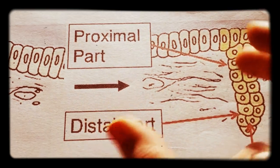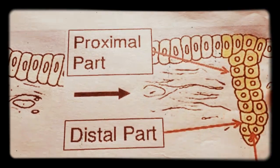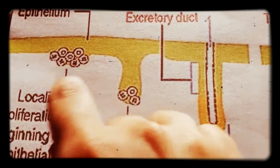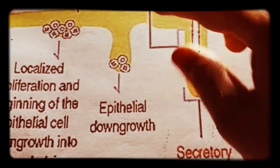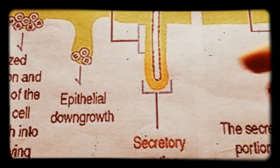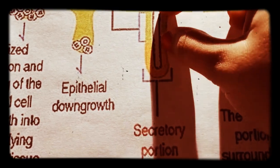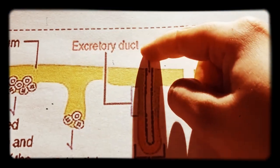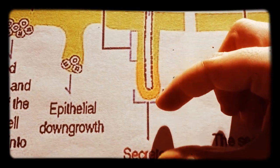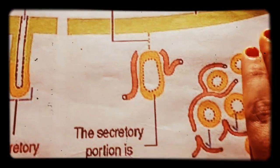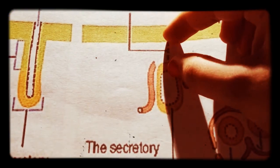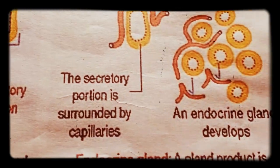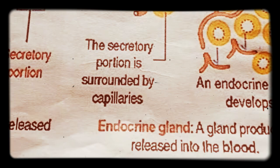In endocrine glands, what happens differently is that the proximal part disappears. In exocrine glands, epithelial cells show localized proliferation and a cord-like extension into connective tissue, eventually dividing into proximal and distal areas — the proximal becomes the duct open on the surface, and the distal becomes the secretory unit. In endocrine glands, the proximal duct portion degenerates, and the secretory portion becomes surrounded by capillaries. This is how endocrine glands develop.